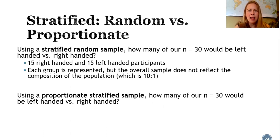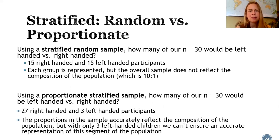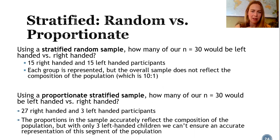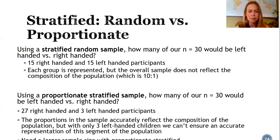Using proportionate stratified sampling with those same 30 participants: if 10% of the target population is left-handed, then 10% of our sample should also be left-handed. That means 3 left-handed kids and 27 right-handed kids. The proportion in our sample accurately represents the target population's composition, but the downside is we only have 3 left-handed kids, which may not give us an accurate representation of that subgroup. So with proportionate stratified sampling, we need a larger overall sample size to ensure all subgroups are well represented.